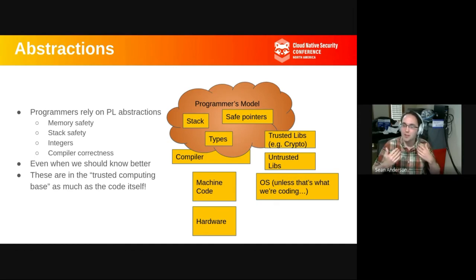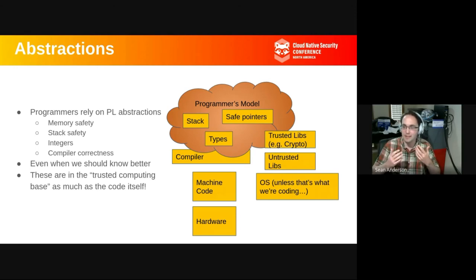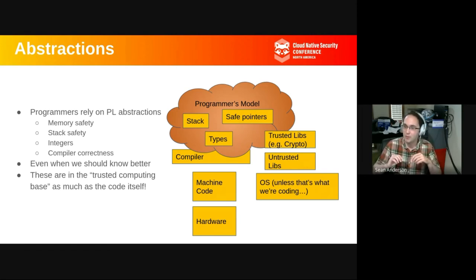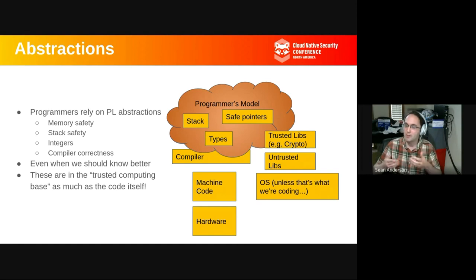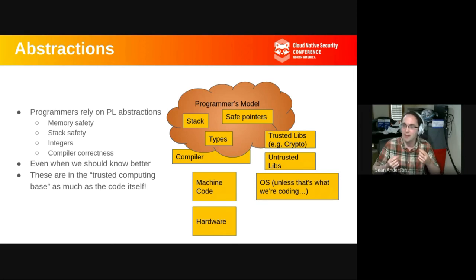We want to think in terms of abstractions. Most programmers have some natural ability to do this by the nature of programming — we have many layers of abstractions in all of our systems. It's useful to think more explicitly about what those abstractions are and what they do for us. Programmers working on a system like Rook Ceph rely on abstractions given to them by the programming language. We rely on the idea that if I call malloc, I'm going to get a block of a particular size that is separate from everything else in the system — that's memory safety.